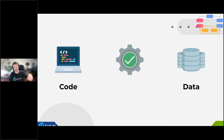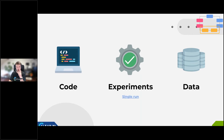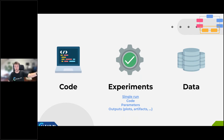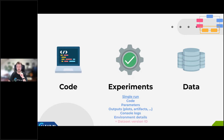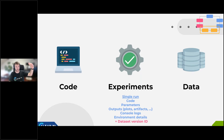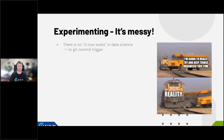Most people agree on code versioning with Git, and you have data versions too. But what is an experiment? An experiment is essentially a single run of your code with a specific dataset version. It's the code, but also the parameters, and the outputs your code produces — which is different from Git. It captures all outputs every run: plots, artifacts, model files, console logs, environment details, and the dataset version ID used. If you use both experiment management and dataset versioning, you always know which data every experiment was trained on.